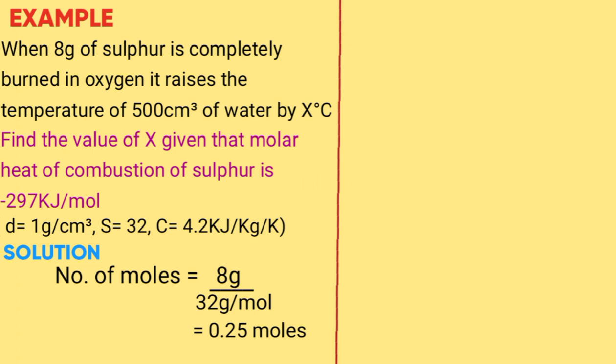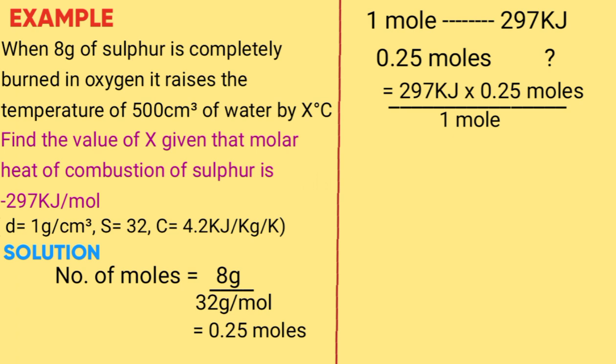Step two, we are told to find the heat change. We say one mole given 297 kilojoules, 297 is the molar heat of combustion, what about 0.25 moles? Cross multiply you get 297 kilojoules times 0.25 moles over one mole, that gives you 74.25 kilojoules.